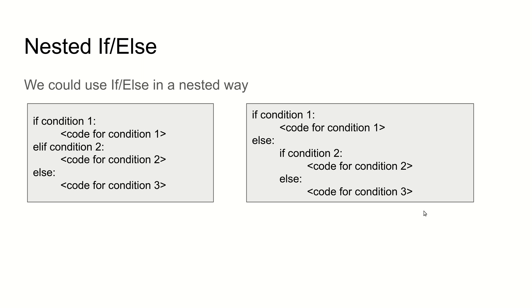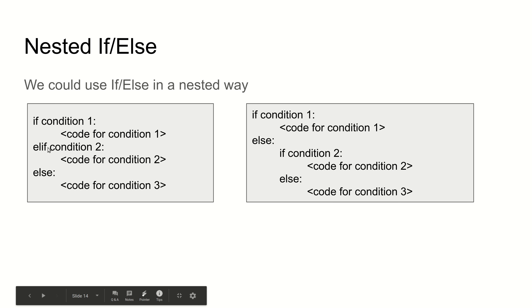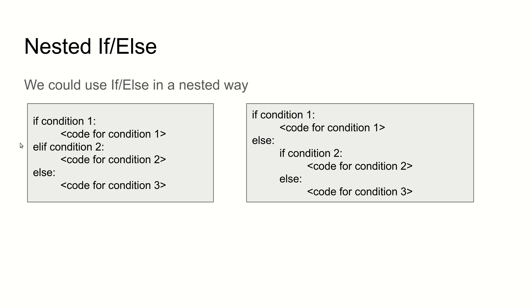An if statement allows our code to check a condition and execute its body only if that condition is true. This allows our programs to be responsive to lots of different possibilities and states — this is the basis for all the differentiation in behavior you've seen in programs. You can build on the if statement using a chain with elifs and eventually an else, or nest if statements inside each other to test one condition, then another, then another inside the existing if statement.